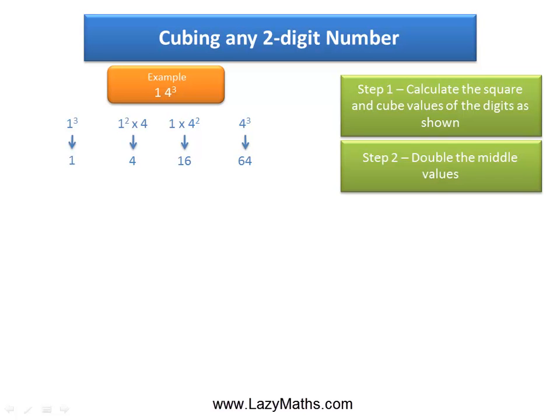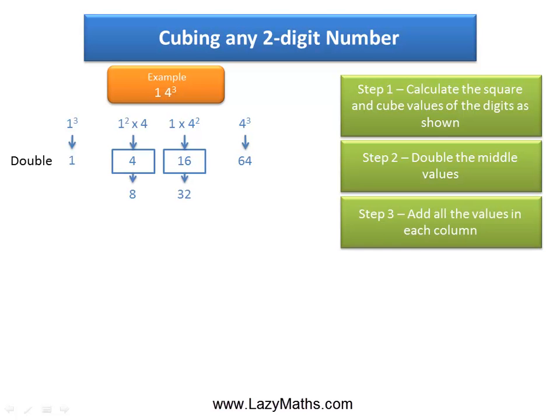The next step is to double the middle values, which are 4 and 16. The double of 4 is 8, and the double of 16 is 32.